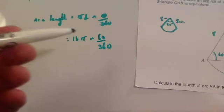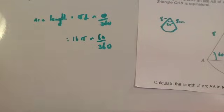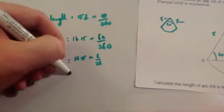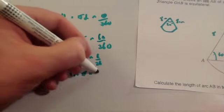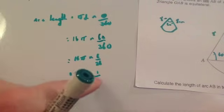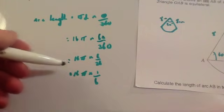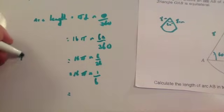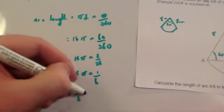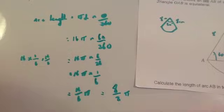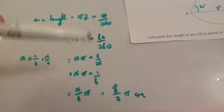Because it's a non-calculator question, you're going to simplify this fraction. Cancelling down: 16 pi times 60 over 360 - divide both by 60 - gives 16 pi times 1 sixth. That's 16 sixths pi. Cancel that down: 16 sixths is the same as 8 thirds, so the arc length is 8 thirds pi centimetres.